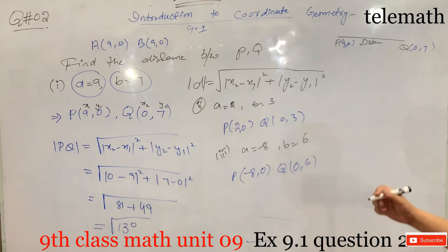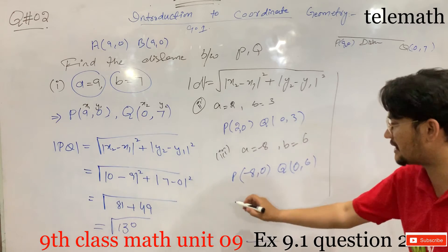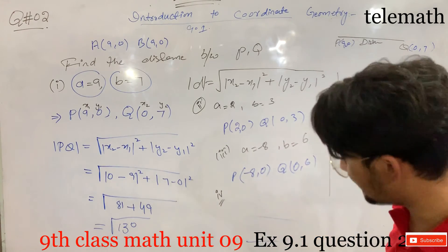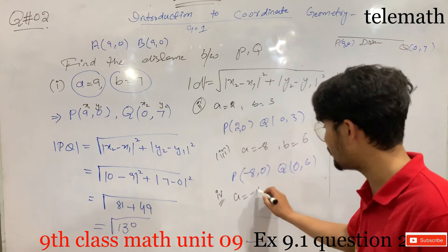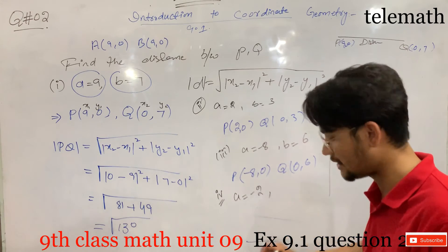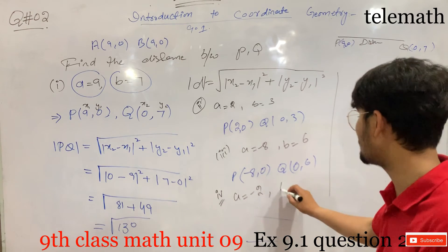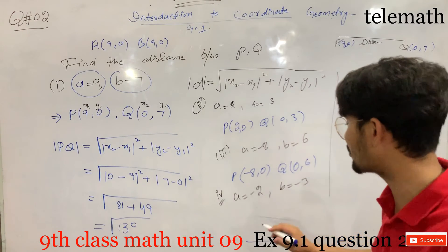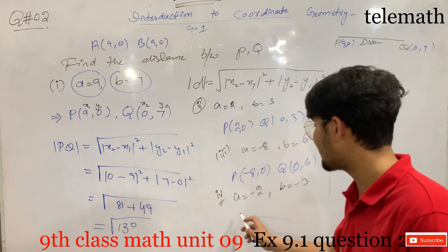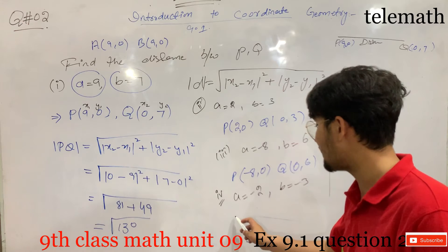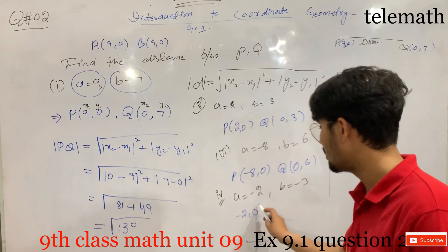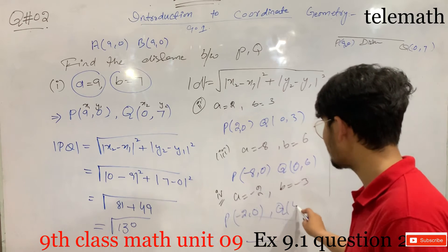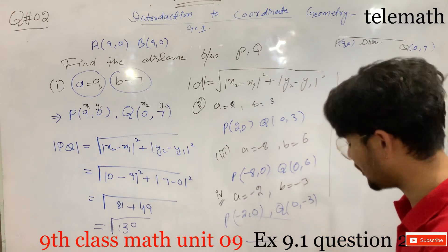Part 4: a is equal to minus 2 and b is equal to minus 3. So we write P = (-2, 0) since x is minus 2 and y is 0 on the x-axis. And Q = (0, -3).